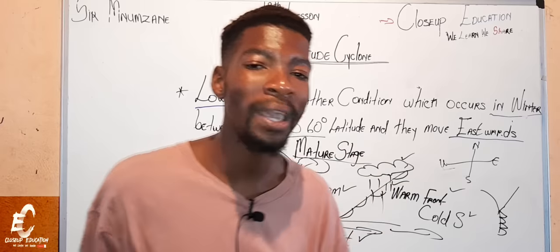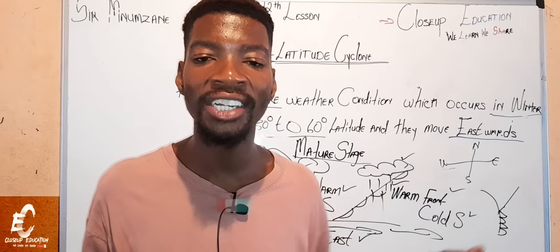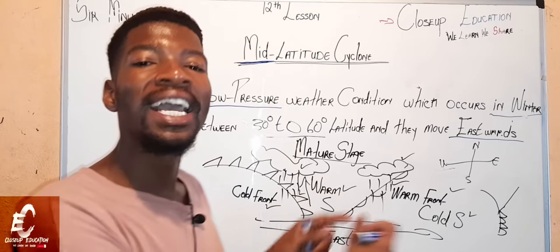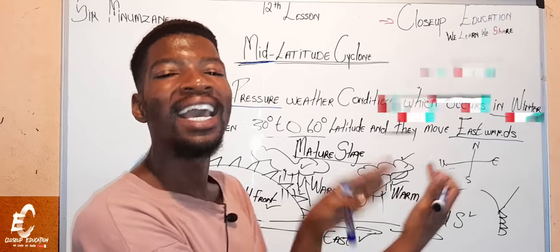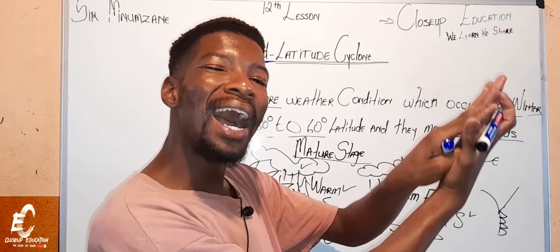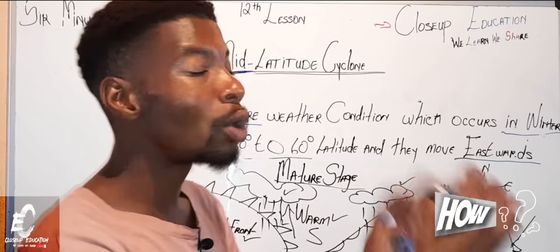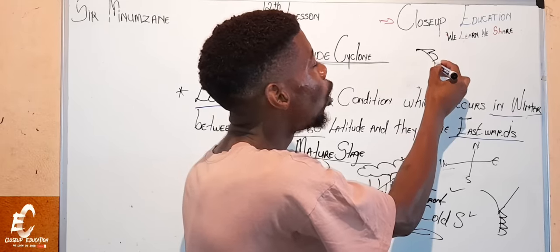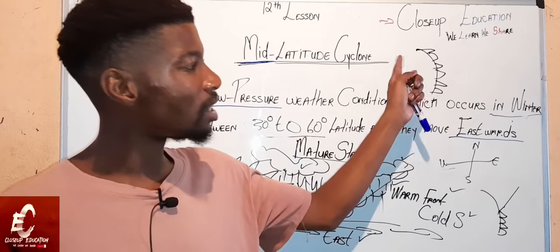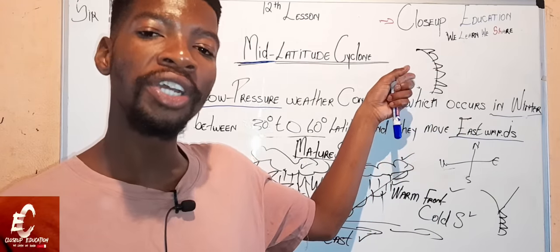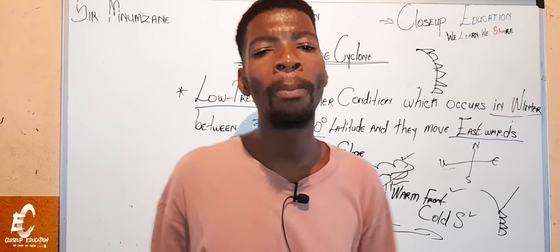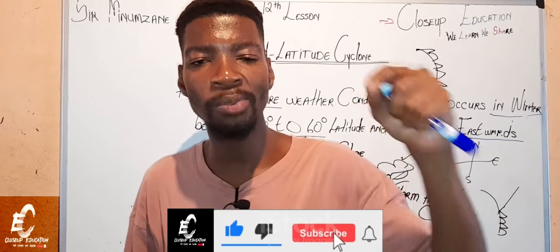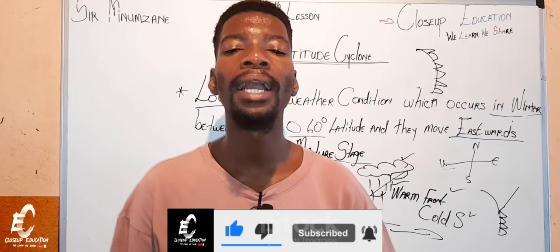The last and final stage is called the dissipating stage. This is where the cyclone ends — the cold front has fully caught up with the warm front and they are now combined and mixed. The cold and warm air are completely mixed, and this is the final mid-latitude stage. I guess you found your marks, guys. Like and subscribe because we are moving to tropical cyclones.